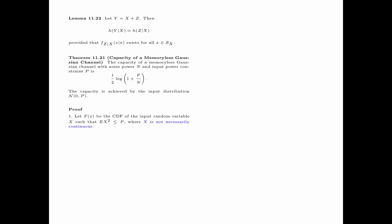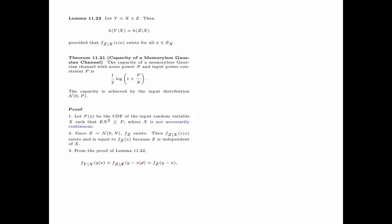We now prove Theorem 11.21. Let F_x be the CDF of the input random variable x, such that E[x²] ≤ p, where x is not necessarily continuous. Since the noise random variable z is Gaussian, the PDF f_z exists. The conditional PDF f(z|x) exists and equals f_z, because z is independent of x. From the proof of the previous lemma, the conditional PDF f(y|x) evaluated at y given x equals f(z|x) evaluated at y − x given x. Since z is independent of x, this equals f_z(y − x). Thus we have shown that f(y|x) of y given x equals f_z(y − x).